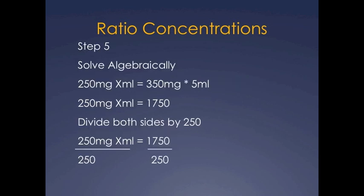Step five, solve algebraically. So on one side you have the 250 milligrams times x ml is equal to 350 milligrams times 5ml. You're going to rewrite it, and you will do on one side 250 milligrams times x ml is equal to 1750, which is the result of the multiplication of 350 times 5.